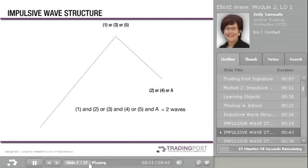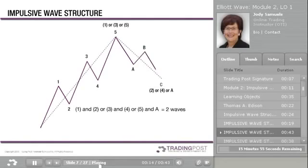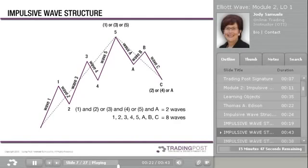The complete 8-wave cycle — 1, 2, 3, 4, 5, A, B, C — is really 2 waves of a larger degree. We can look at it another way as well. Looking at this sequence as waves 1 and 2, we can say that waves of any degree in any series always subdivide into waves of a lesser degree. Specifically, waves 1 and 2 of the daily chart will subdivide into waves of a lesser degree which can be seen on an hourly chart.